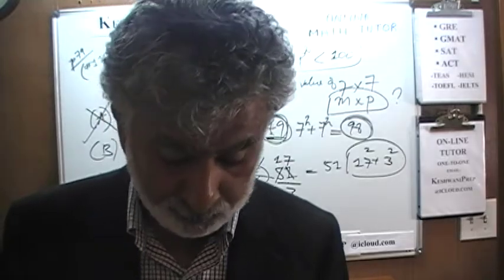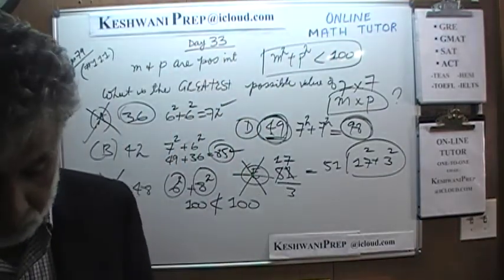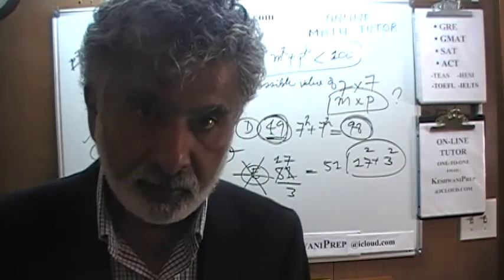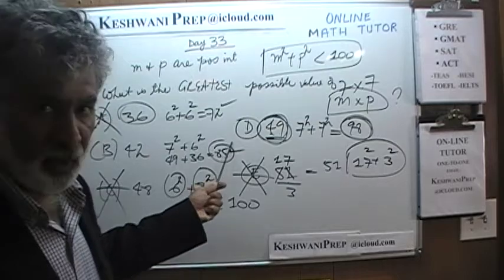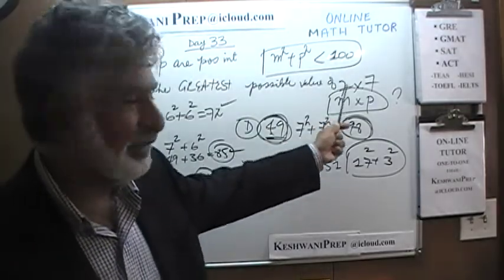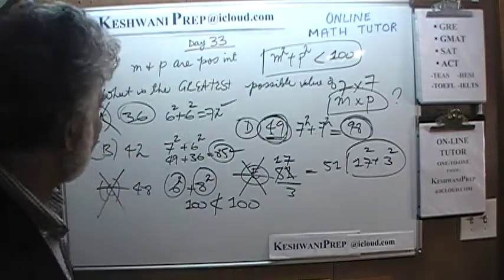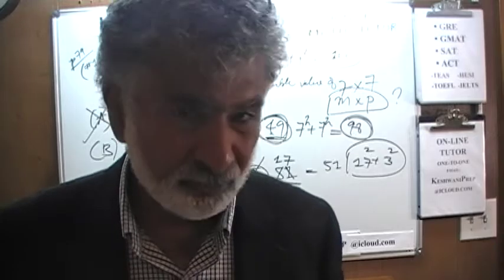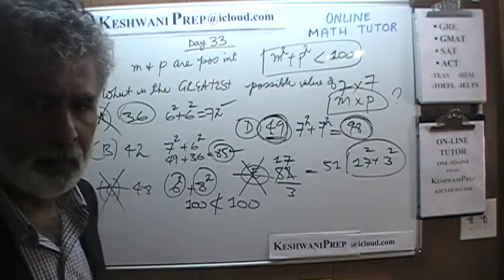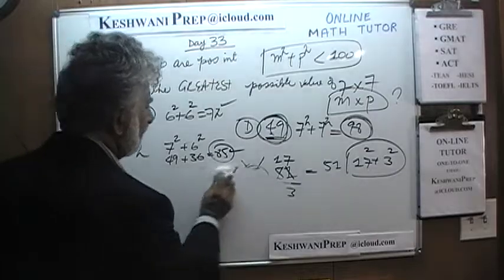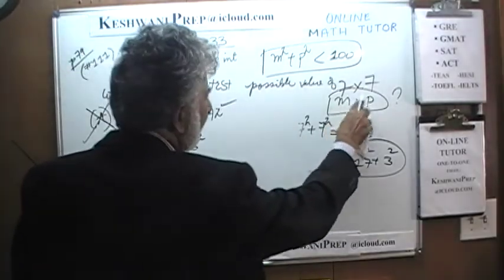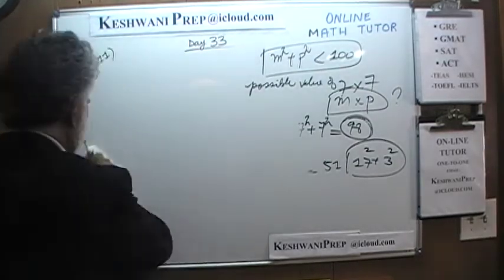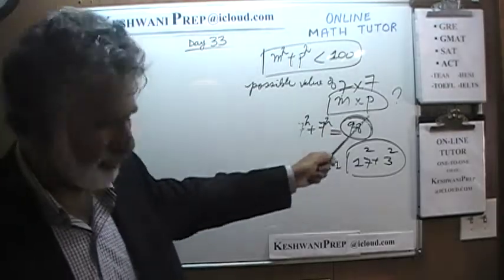Personally, I do not like this problem. I think someone was in a hurry and put it together. I hate the idea that M and P are the same value — it is very misleading and deceiving. Even though the problem does not say they cannot be the same, I still find it too dirty. One would naturally assume that different symbols mean different values.